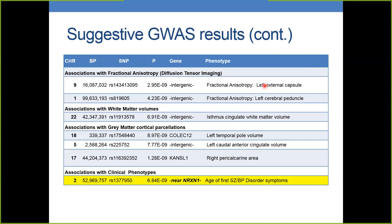From the DTI, we found fractional anisotropy for the left external capsule and left cerebral peduncle related to intergenic markers. White matter volume from the isthmus cingulate is also associated with an intergenic marker on chromosome 22. There are also suggestive associations with CAMSIL and COLEC12 for temporal pole volume and the pericalcarine area. A particularly nice finding was a marker very close to Neurexin-1 related to the age of first schizophrenia or bipolar disorder symptoms, suggesting age of onset is also related to this gene.